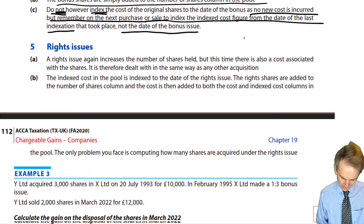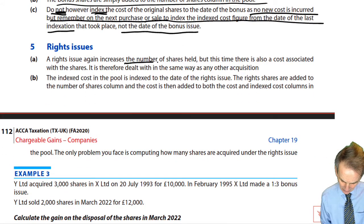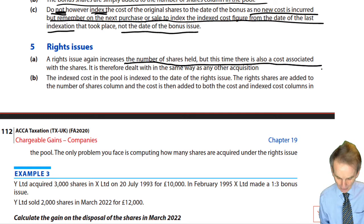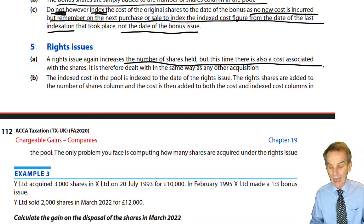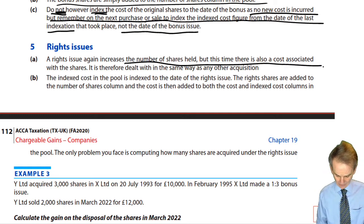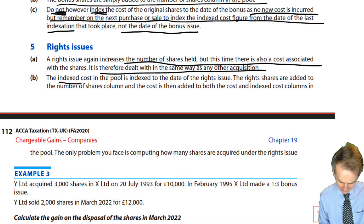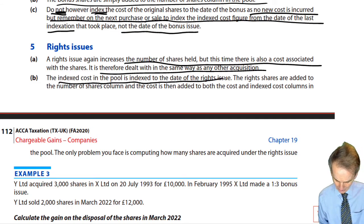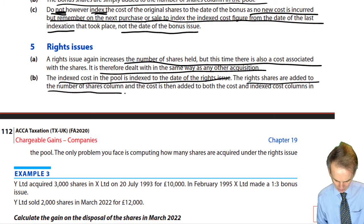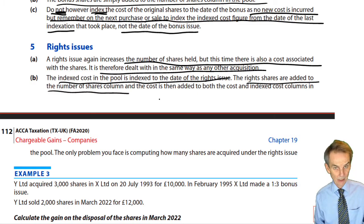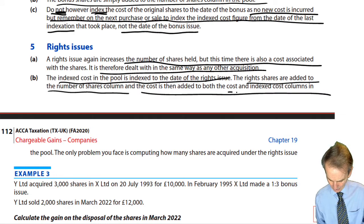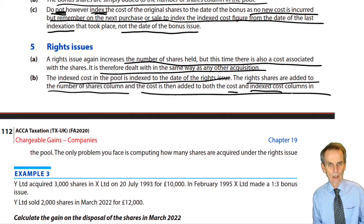With a rights issue, it again increases the number of shares held, but now there is also a cost — how much are you paying per share? It is therefore dealt with in the same way as any other acquisition. The index cost in the pool is indexed to the date of the rights issue; we then add the rights shares to the number of shares column, and whatever the associated cost is, that cost is added to both the cost and the index cost columns.